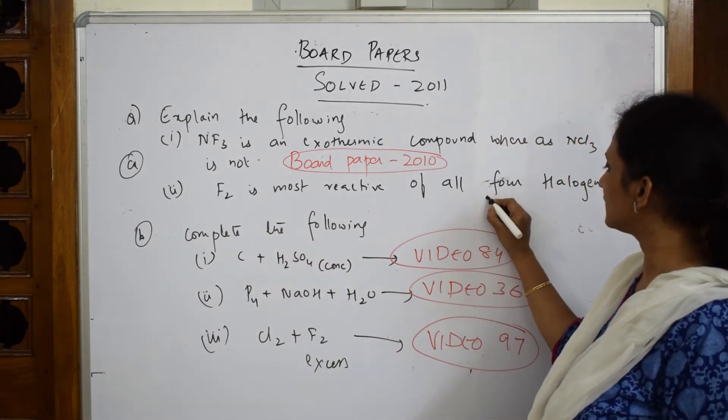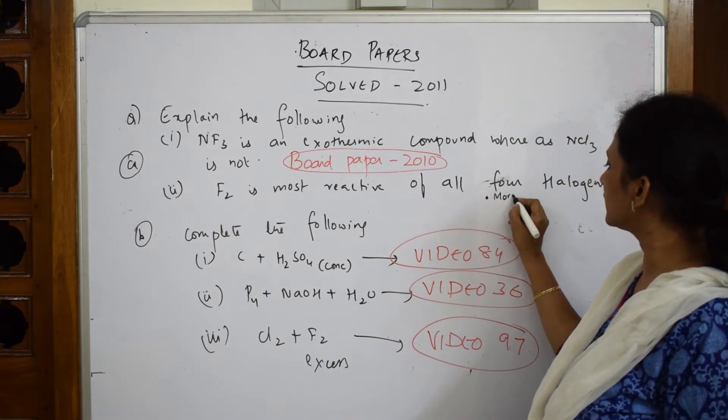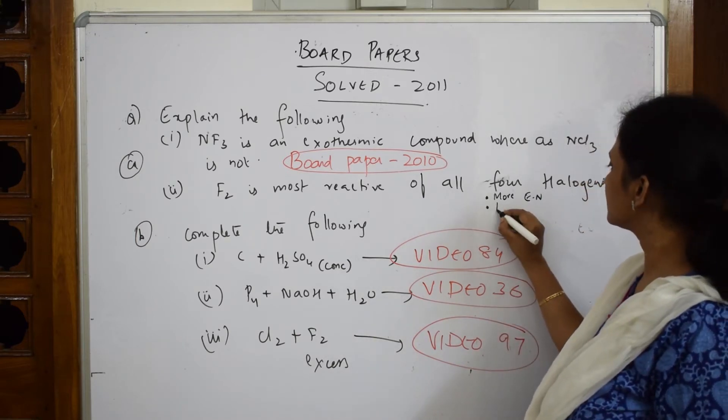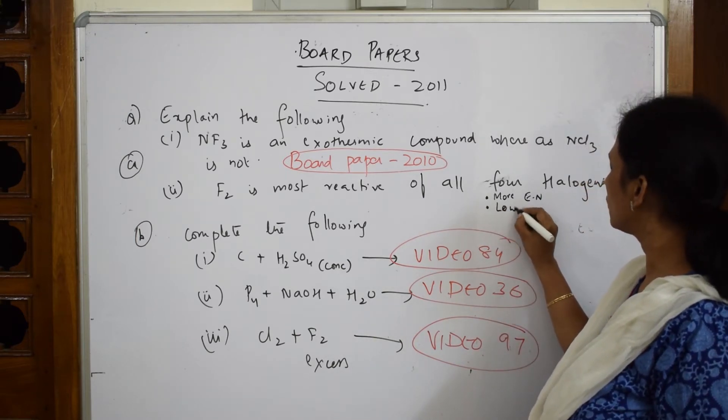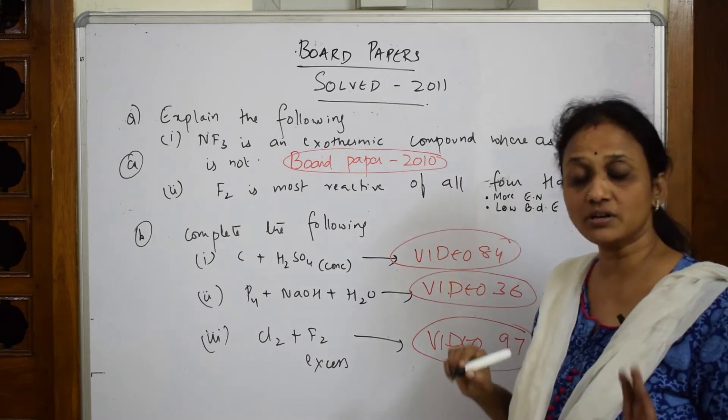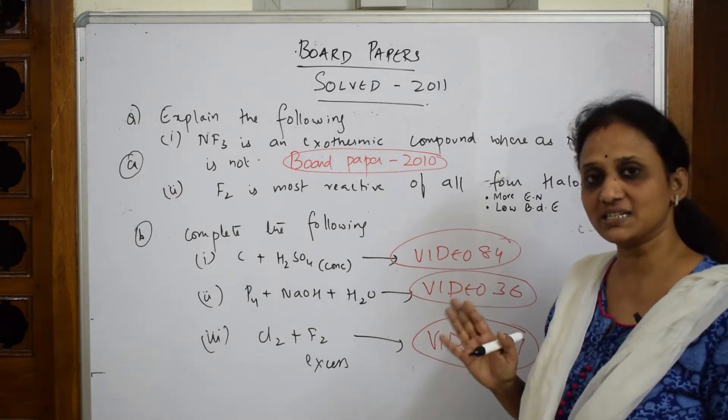First keyword - it is more electronegative. Second - it has least or low bond dissociation enthalpy. Bond dissociation enthalpy means energy required to break the bond. I did that video, please watch, you'll understand the concept. I'm writing the keywords only.